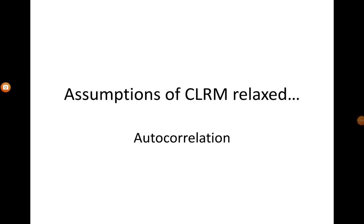In this lecture we are going to look at the result of relaxing one more important assumption of the classical linear regression model. The assumption is that the error terms ui and uj are not correlated — it is called the assumption of no autocorrelation. We will examine what happens if this assumption is violated.